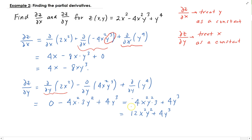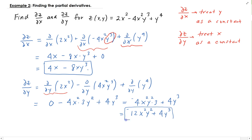Putting the minus sign back in, we have our final result. The partial of Z with respect to X is 4X minus 8X Y cubed, and the partial of Z with respect to Y is negative 12X squared Y squared minus 4Y cubed. Notice that the two partial derivatives give us different function values. We'll do some more examples of these.